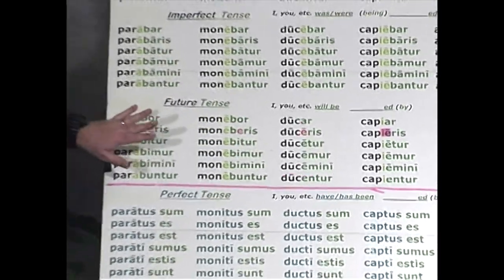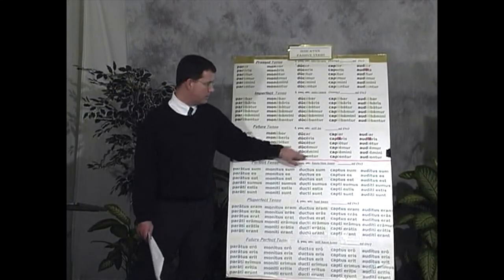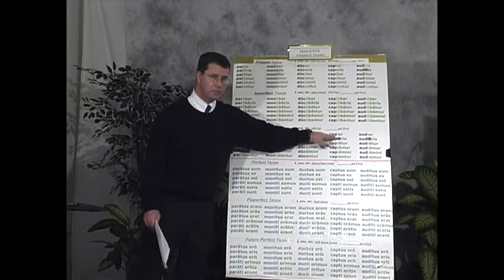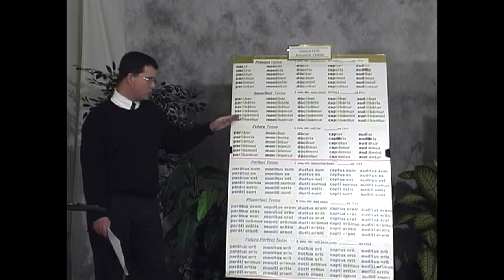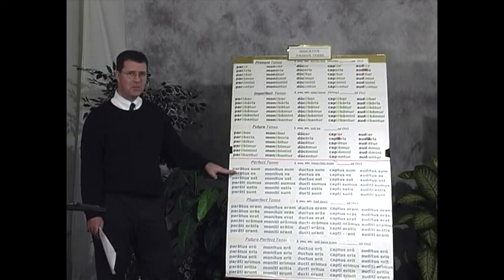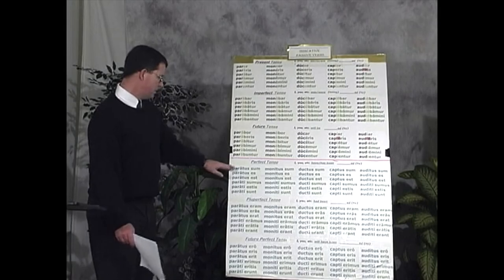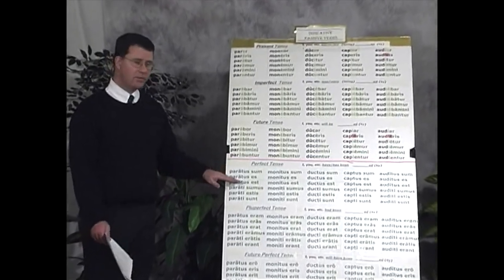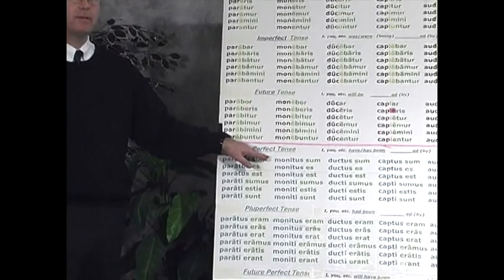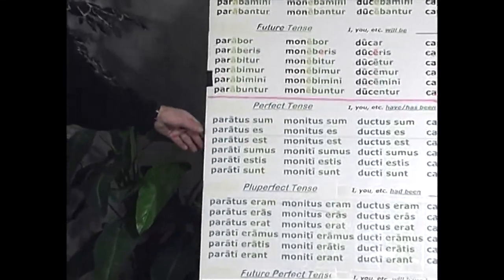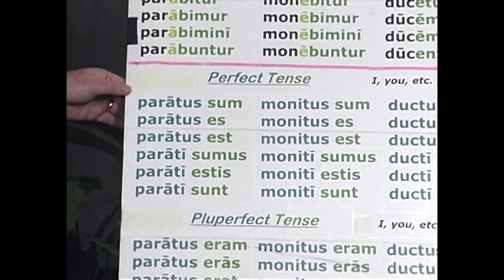The future tense is the difficult one — it's the one that experiences these vowel changes. Once we get past the future, we have smooth sailing again. Once you learn the system for how this is formed, the perfect passive indicative is what we want to look at now.